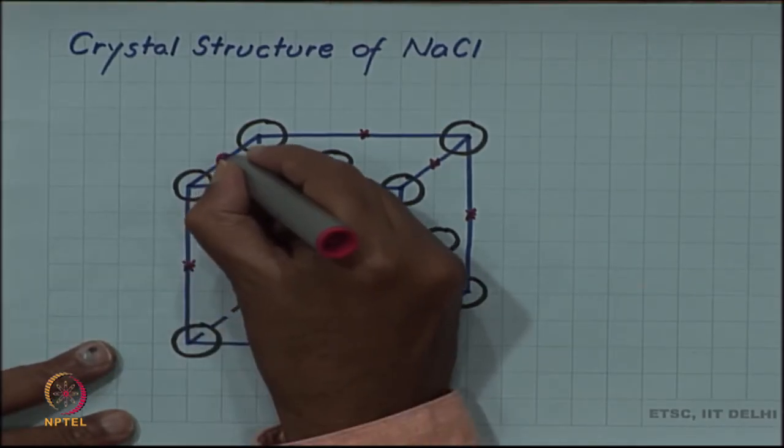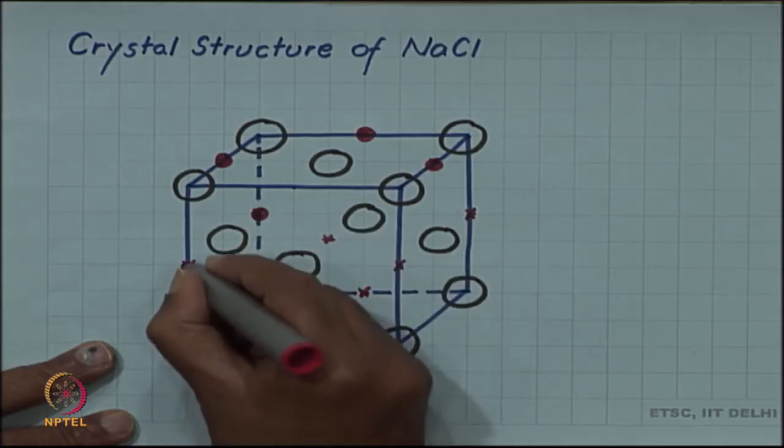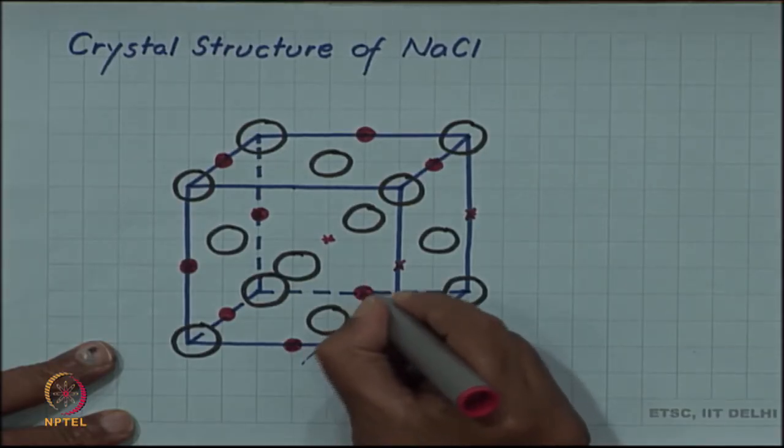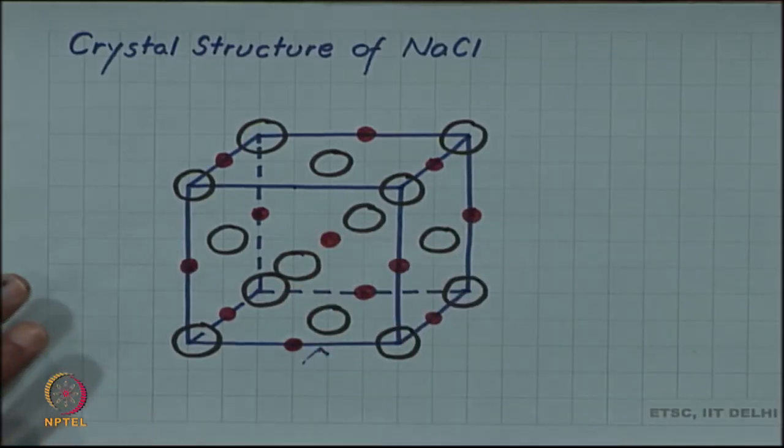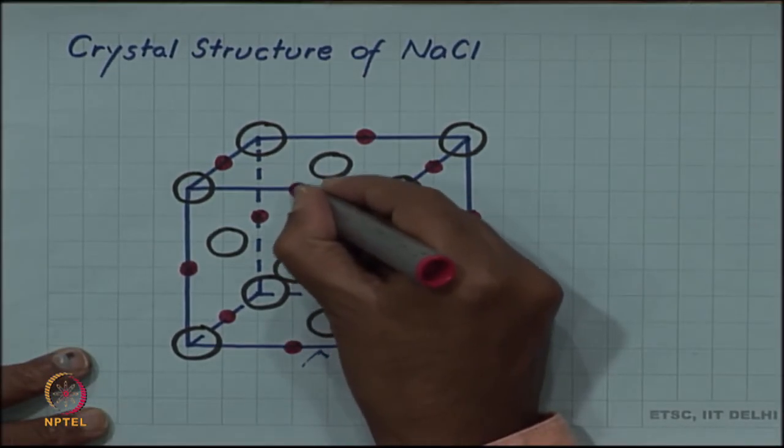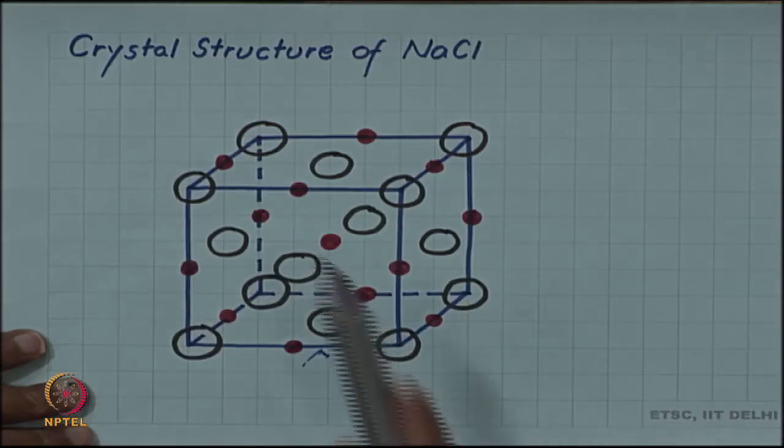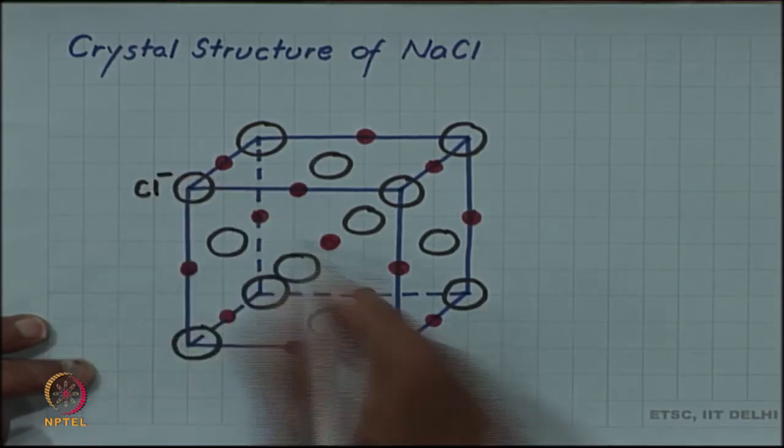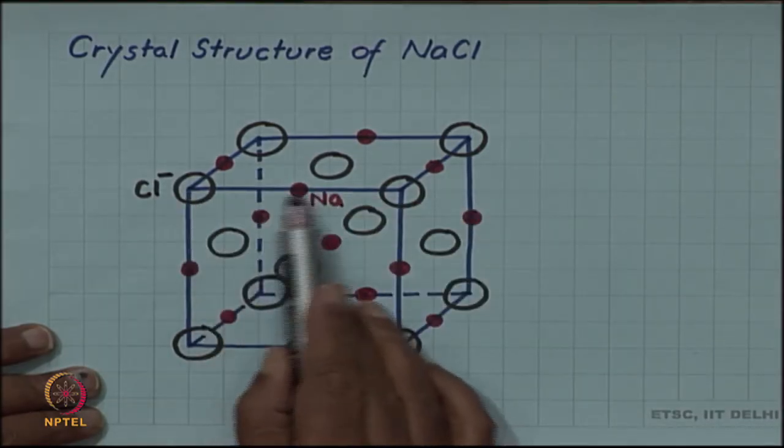If I put a sodium ion on each of these, my structure is complete. This is the sodium chloride crystal structure. I am showing the ions spaced out; in reality, the closest ions will be touching. The chloride ion sitting on this corner and the sodium ion sitting here along the edge are actually touching.